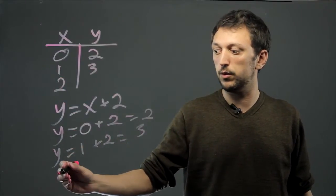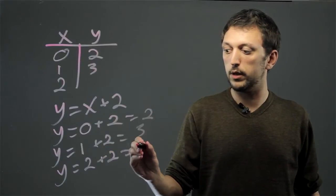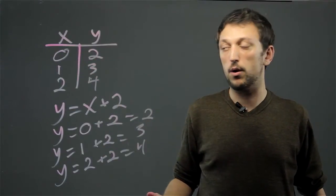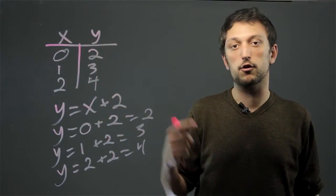We can try x equals 2. So y equals 2 plus 2, which equals 4. And as we go, we now have a pattern, and we could also graph the line based on the ordered pairs we have from the t-chart.